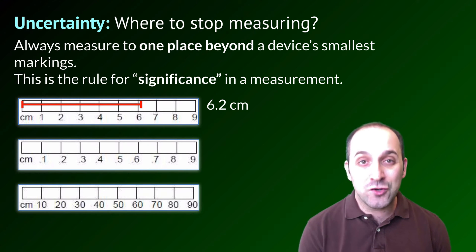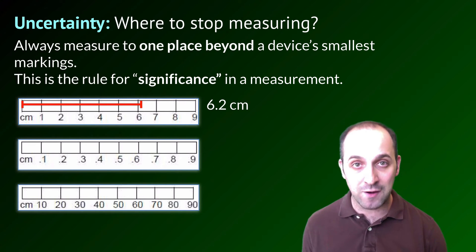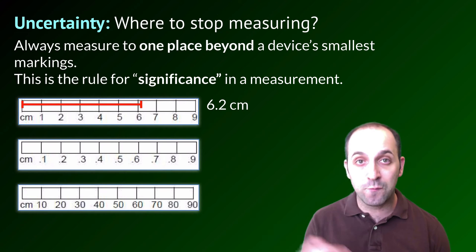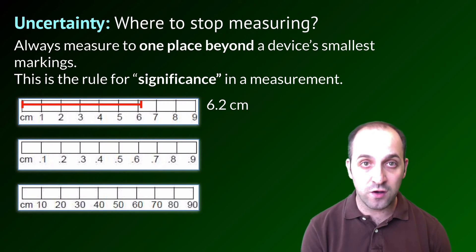But if you measured this to be 6.9 centimeters, that's a problem. Or if you measured this just to be 6 centimeters, that is also a problem because you have one additional degree of precision beyond the markings on the device.